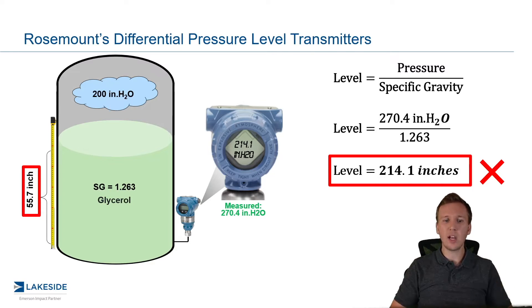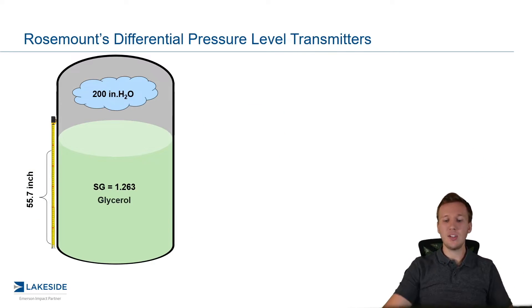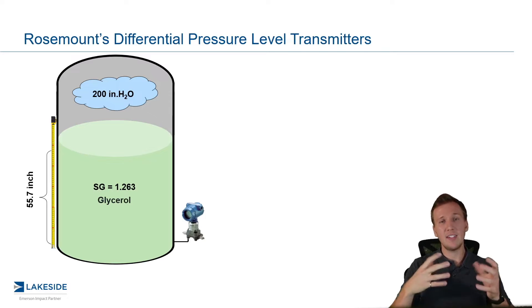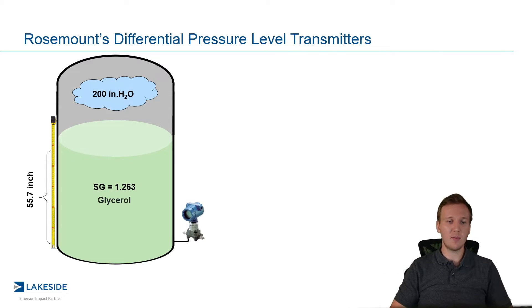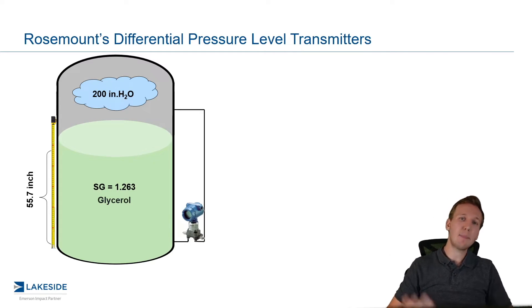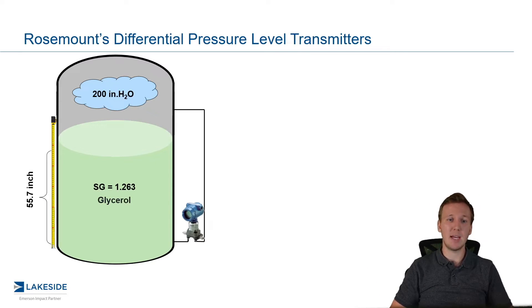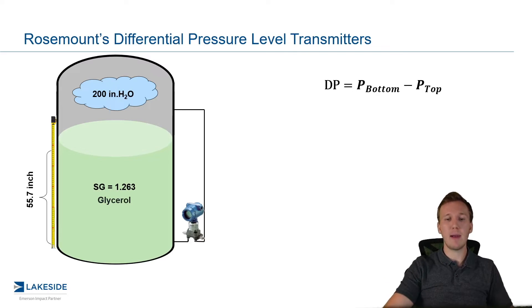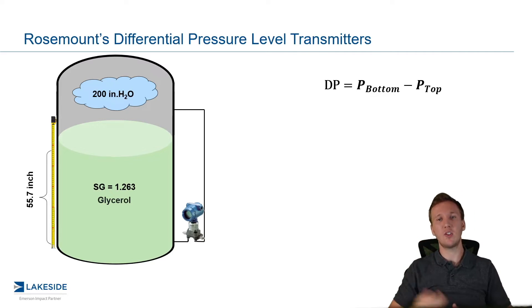So how do we solve this? We instead use a differential pressure level transmitter — and this is where the term DP level comes from. We don't just have it set up as pictured here. Instead, that low side, that low pressure side, we connect it up to the top of the vessel so it can sense that vapor space pressure. Now as the name implies — differential pressure — we are comparing the pressures at the bottom of the vessel versus the top of the vessel.